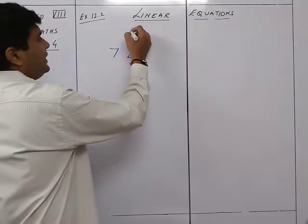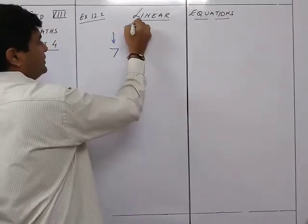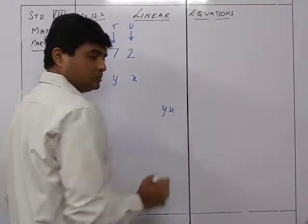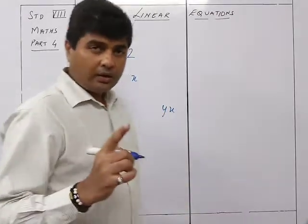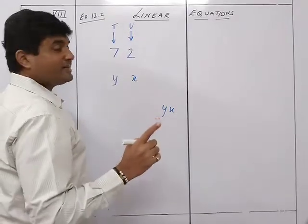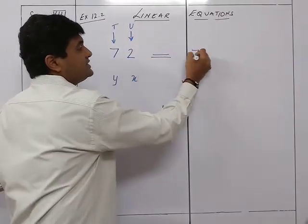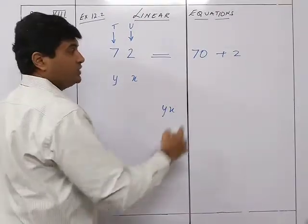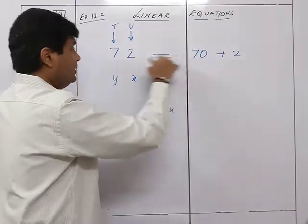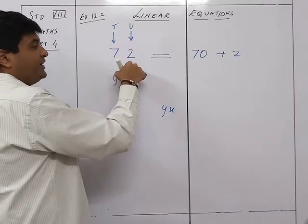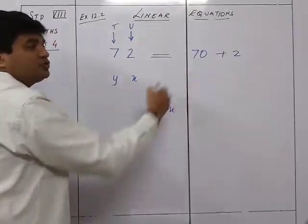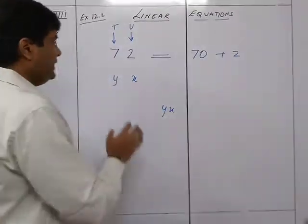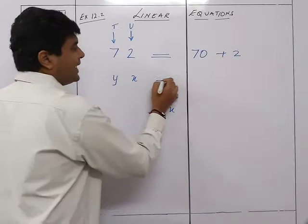Let the units place be x and the tens place be y. Can I say the number is yx? No, because 72 is written as 70 plus 2 — the 7 is multiplied by its place value. This is the place value, not the face value. The face value of 7 is 7, but its place value is 70. So the number is written as 10y plus x.